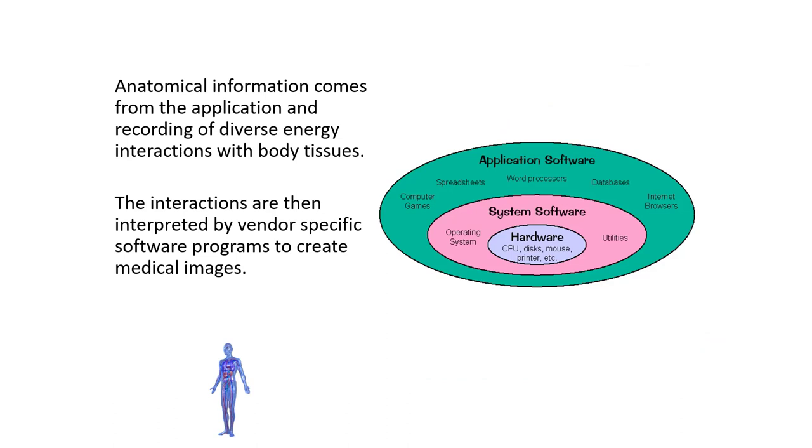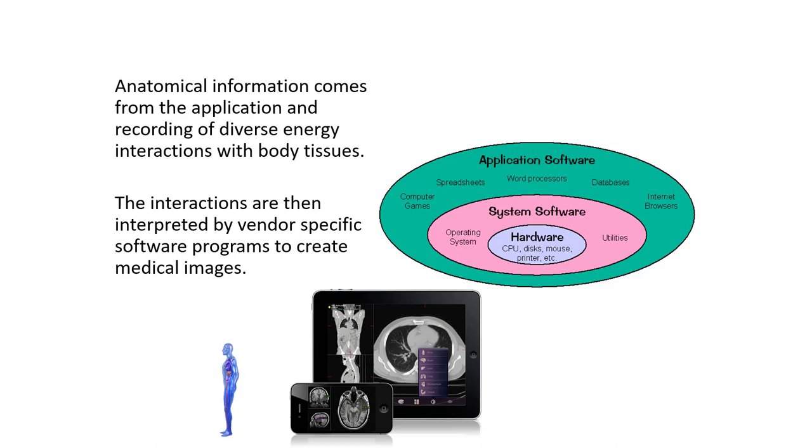Anatomical information comes from the application and recording of diverse energy interactions with body tissues. These interactions are then interpreted by vendor-specific software programs to create medical images. The medical images are then interpreted by the radiologists for reports and distribution of the data to requesting physicians.